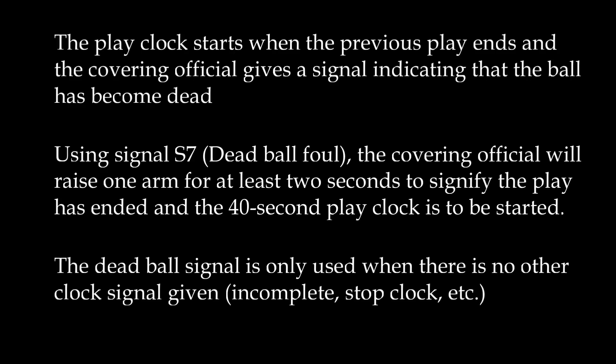Only use that arm-in-the-air signal when there's no other clock signal given — for example, an incomplete pass signal, a kill-the-clock signal for a first down or out of bounds, or a touchdown signal. If you're killing the clock after the play because there's a penalty, that could go to a 25-second play clock. But only use that arm-in-the-air signal if you're not killing the clock using another signal. Otherwise, that incomplete or stop-the-clock signal tells the back judge or referee to start the play clock.